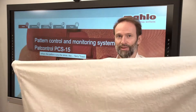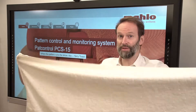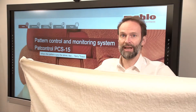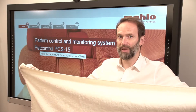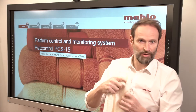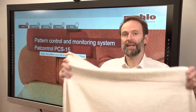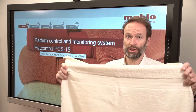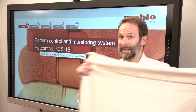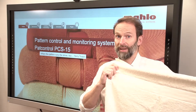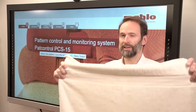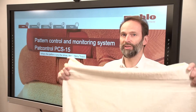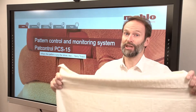Today's topic is about terry towels. As you can see, the surface of terry towels is very hard to detect and therefore weft detection is not possible. However, they require a very good quality and we have to make sure that the distortion is eliminated and the length repeat is always the same. Therefore we have to use a special technology. I want to show you this technology right now.